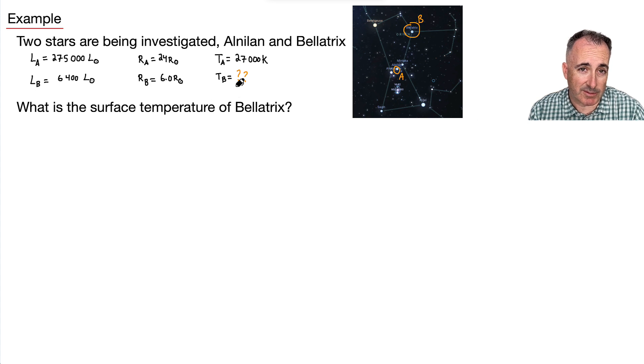So how do we do this? I think it would help us out, first of all, just to write the equation that we need here, which is L equals sigma times A T to the fourth. But remember that this surface area right here, remember what this is. This is 4 pi R squared. That's where the radius comes in.